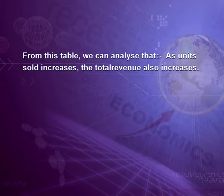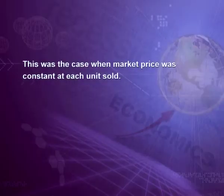From this table we can analyze that as units sold increase, total revenue also increases. Average revenue is equal to price at each level of quantity sold, because average revenue is per-unit revenue and will always equal price. Since price is constant at rupees 10 for each unit sold, marginal revenue is also equal to price — every additional unit yields additional revenue equal to rupees 10.